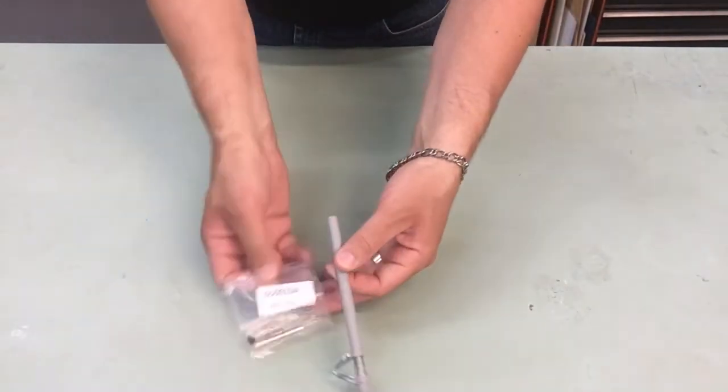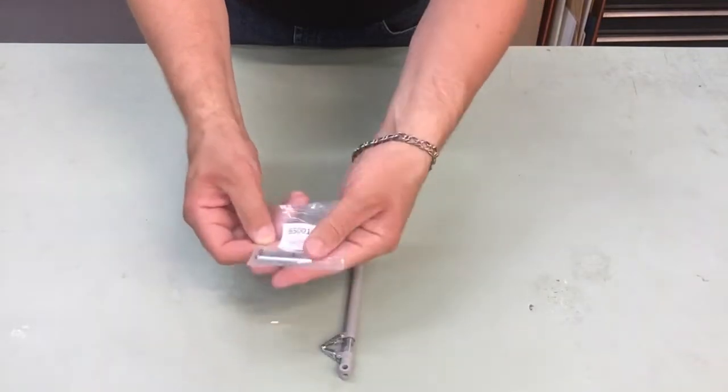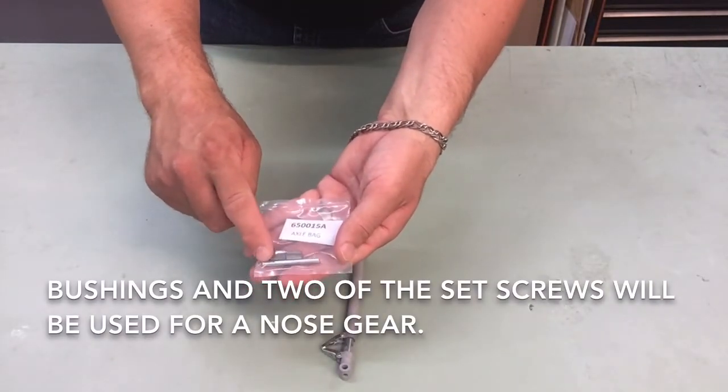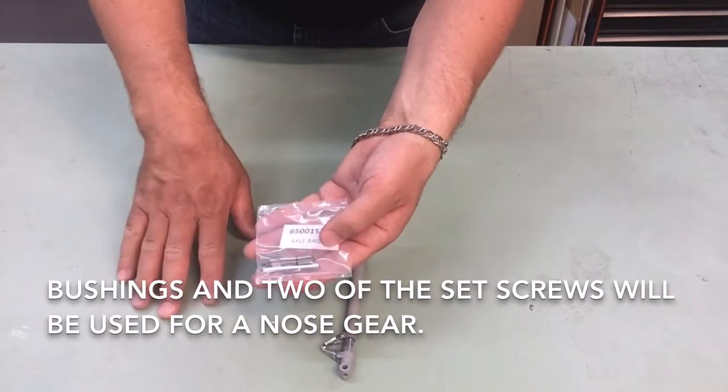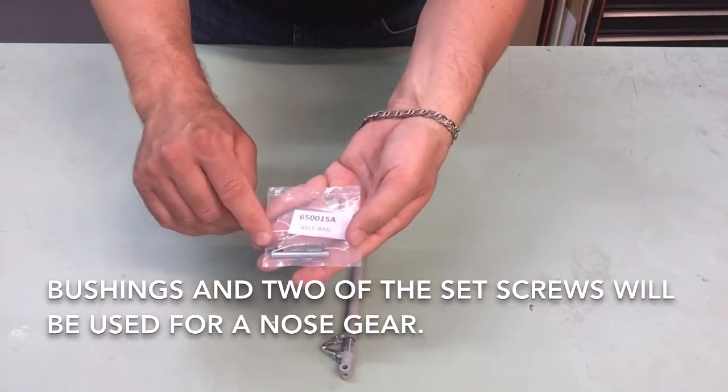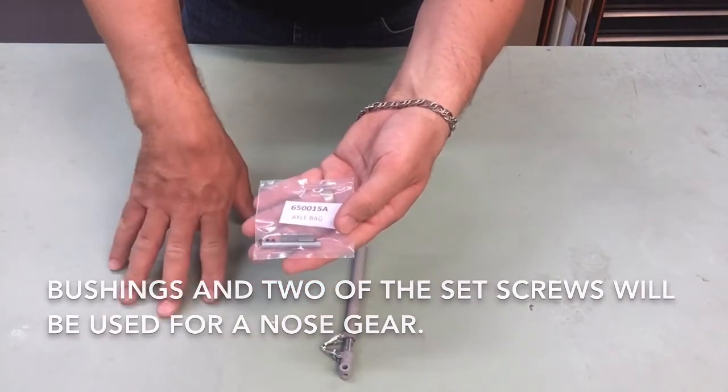Alright, so in the 650 you do get your axle bag and in this axle bag you're going to find your bushings, which we'll talk about in a future video, and then you get your set screws and the axle.